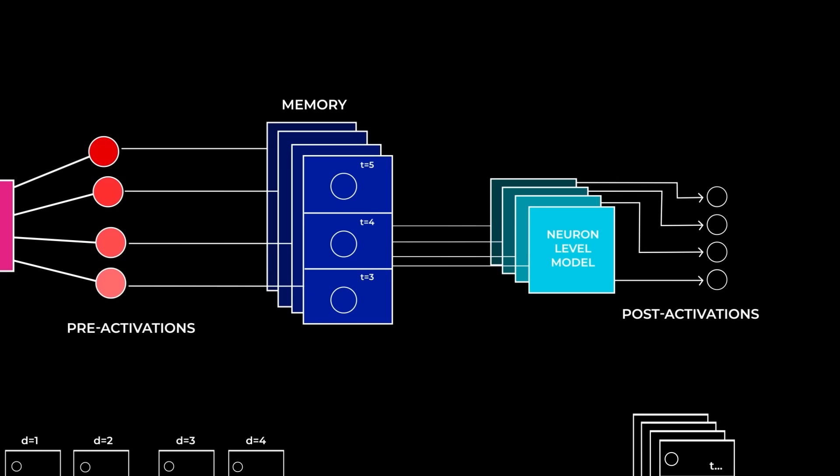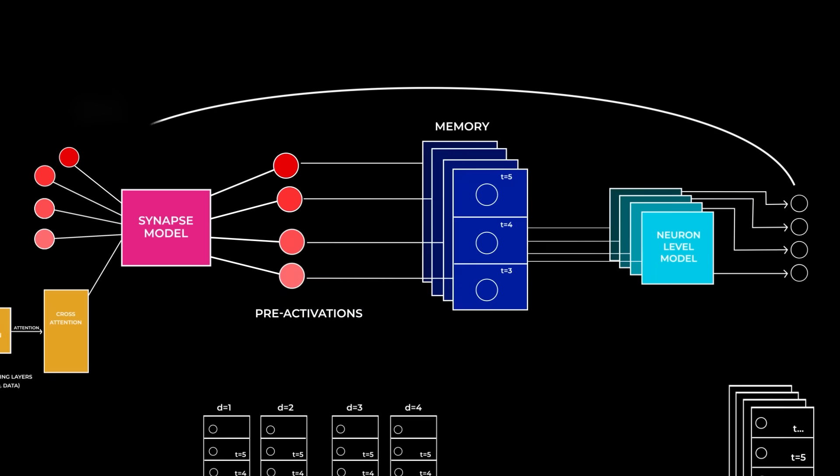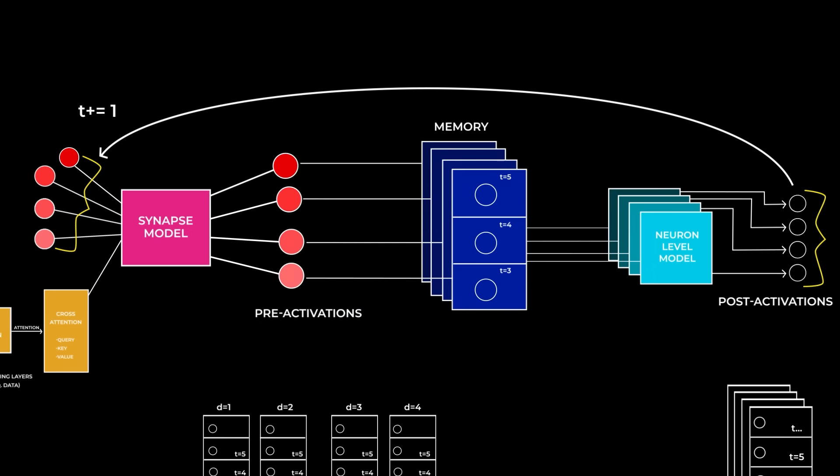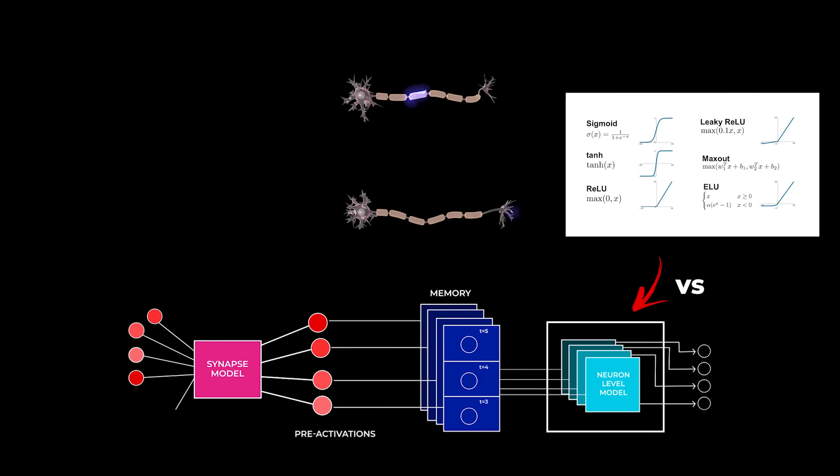Then each NLM will generate a post-activation, so 4 post-activations in total from 4 NLMs which will be sent to the synapse model for the next tick. So basically, this small NLM processes a history of incoming signals uniquely to its neuron in order to determine its own activity level. It's kinda in a way mimicking individual biological neurons that can demonstrate more complex, diverse, and time-sensitive responses compared to the simple uniform activation functions that the typical AI model has right now.